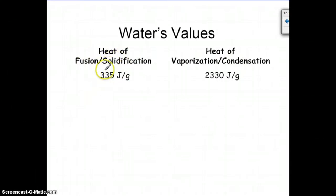The heat of fusion or solidification is 335 joules for one gram, so it takes 335 joules to melt one gram of a substance or negative 335 joules to freeze one gram of a substance. Heat of vaporization is 2,330 joules for one gram and then condensation is going to lose 2,330 joules for every one gram. Just remember that condensation and solidification are going to be negative, same number but negative.